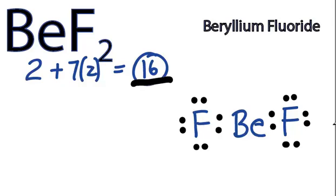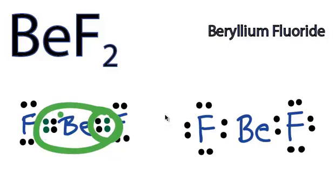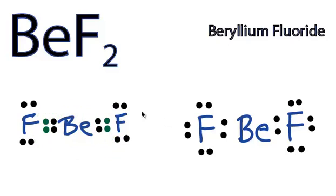So I could also draw beryllium fluoride a different way. Over here I'm using the same number of valence electrons, but by sharing, I've created double bonds between the beryllium and the fluorine. That gives the beryllium eight, while the fluorine still has eight as well. So everything has an octet on this side.